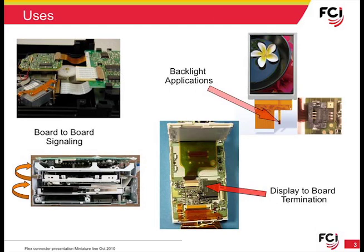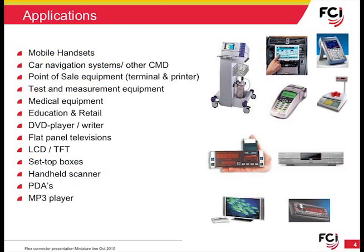One of the reasons flex circuits and connectors have become an important part of the connector world is their unique ability to fill the role of problem solver. Flex circuits can be used to bridge the gap between two boards not positioned for a traditional two-piece coplanar or mezzanine interconnect solution. Flex cable can transmit signal as well as small amounts of power from one board to another. Another popular use is as an interconnect for backlighting applications, and perhaps the most common use is to terminate an LCD or other display to a printed circuit board. Applications range from mobile handsets and handheld devices to flat panel TV, medical, and industrial products.